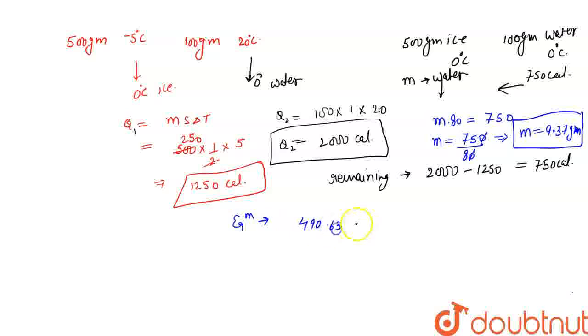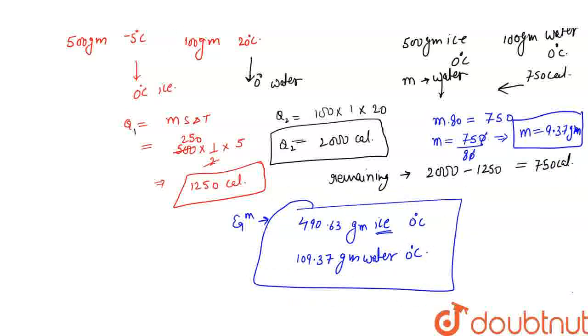At equilibrium, I have 490.63 grams ice at 0 degree Celsius and water is 100 grams already plus 9.37, so 109.37 grams water at 0 degree Celsius. The answer is, in the equilibrium mixture, ice remaining is 490.63 grams. I hope you understood clearly. Thank you.